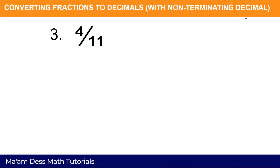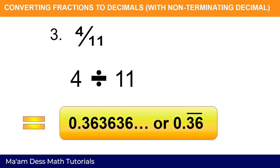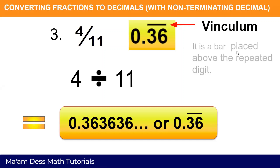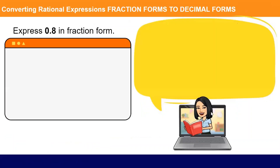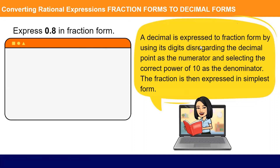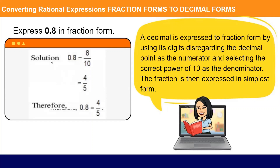Let us check if our solution is correct. The vinculum is the bar placed above the repeated digit. How to convert decimals to fractions: a decimal is expressed in fraction form by using its digits — disregarding the decimal point — as the numerator, and selecting the correct power of ten as the denominator. The fraction is then expressed in simplest form. For example, eight tenths: write eight as the numerator and ten as the denominator, which equals four fifths.